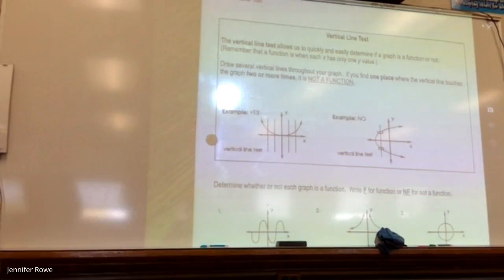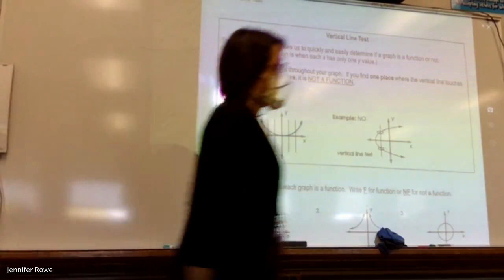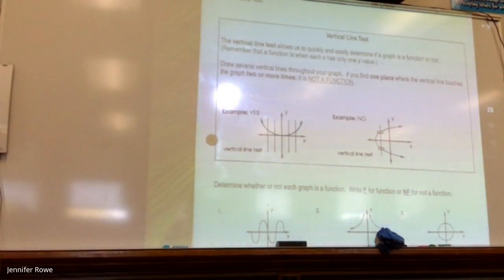There are two examples to look at. The first example has a big U shape. I'm going to switch my marker color. I'm going to draw that first vertical line — how many times do the orange and blue intersect? One time. Correct. So far so good.